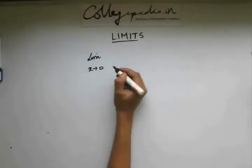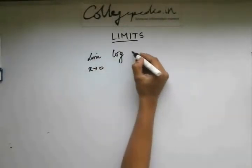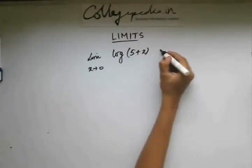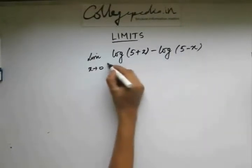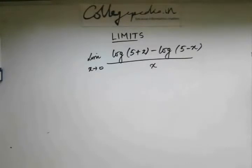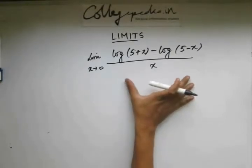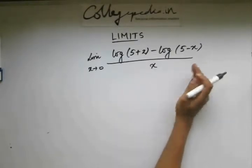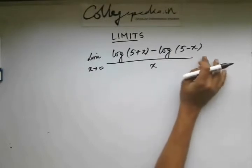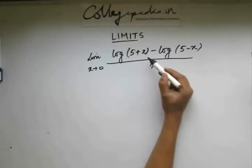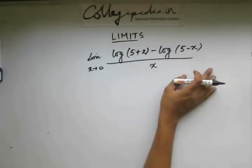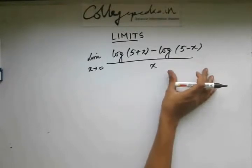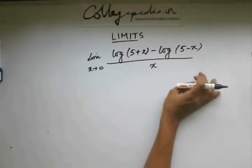The question is limit x approaches 0: log of 5 plus x minus log of 5 minus x divided by x. Whenever you have been given questions on logarithms, try to somehow modify this to the form whose results we know. Here you see that if I put x equals to 0, it gets converted into 0 by 0 form. So we can always apply L'Hospital's rule. But again, I will try to manipulate this to the standard result so that we can directly apply the result.